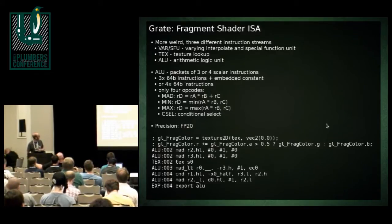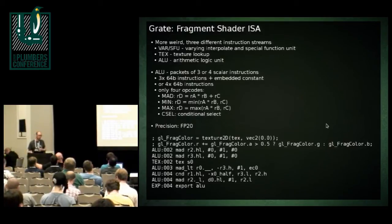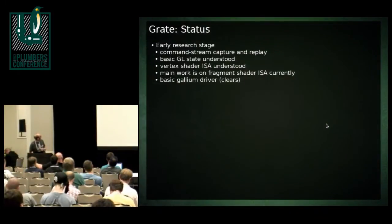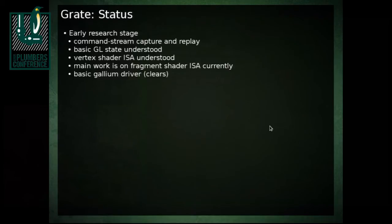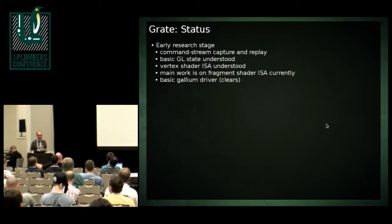The ALU stream is interesting in that it really only has four instructions: MAD, min, max, and conditional select. Using those four instructions in different combinations, plus some special register values for hard-coded one or zero, you can combine them in a lot of interesting ways. The precision here is 20-bit floating point. The current state is still fairly early research stage — you can do command stream capture and replay, some very basic things like GL clears, but the blocking point is getting a better understanding of the fragment shader.